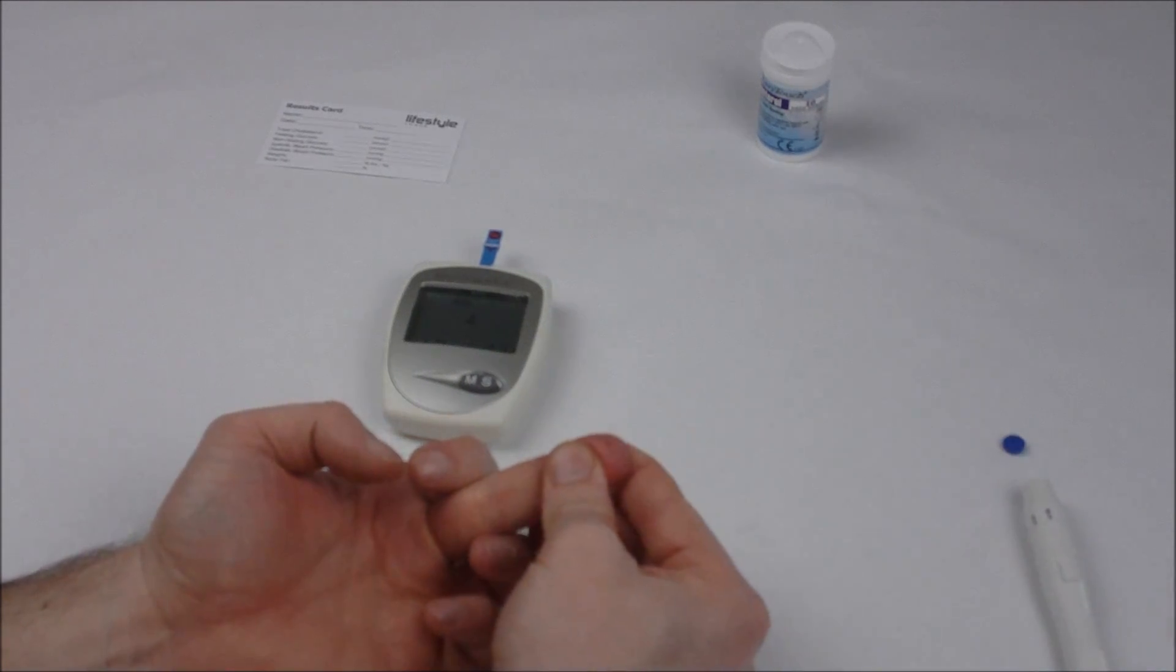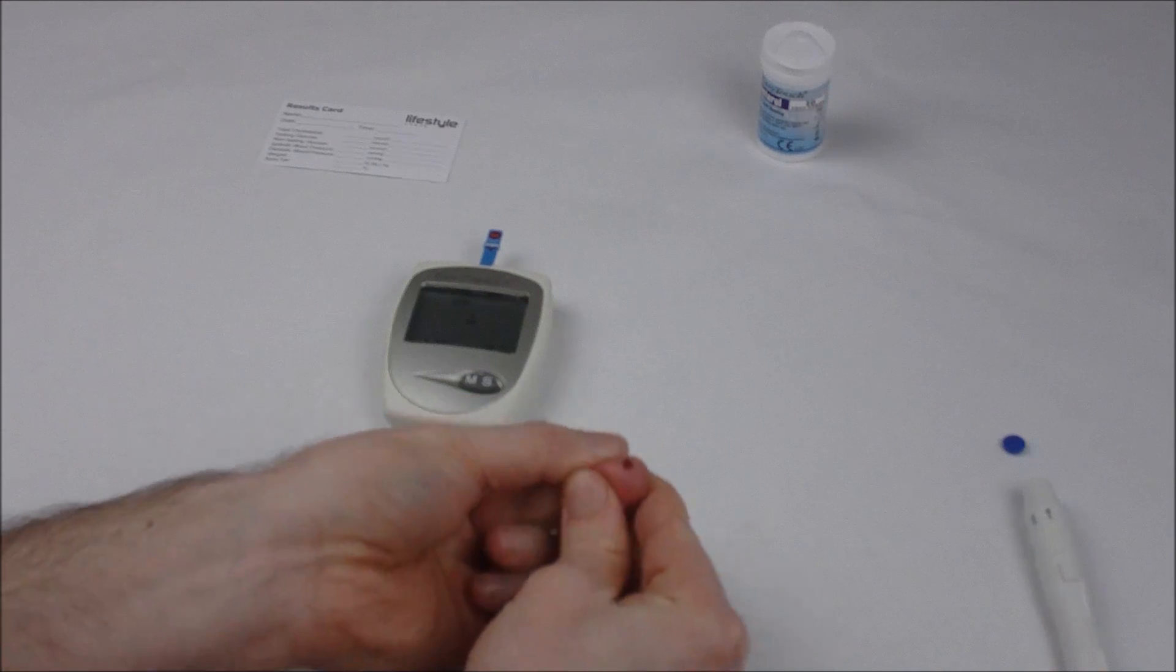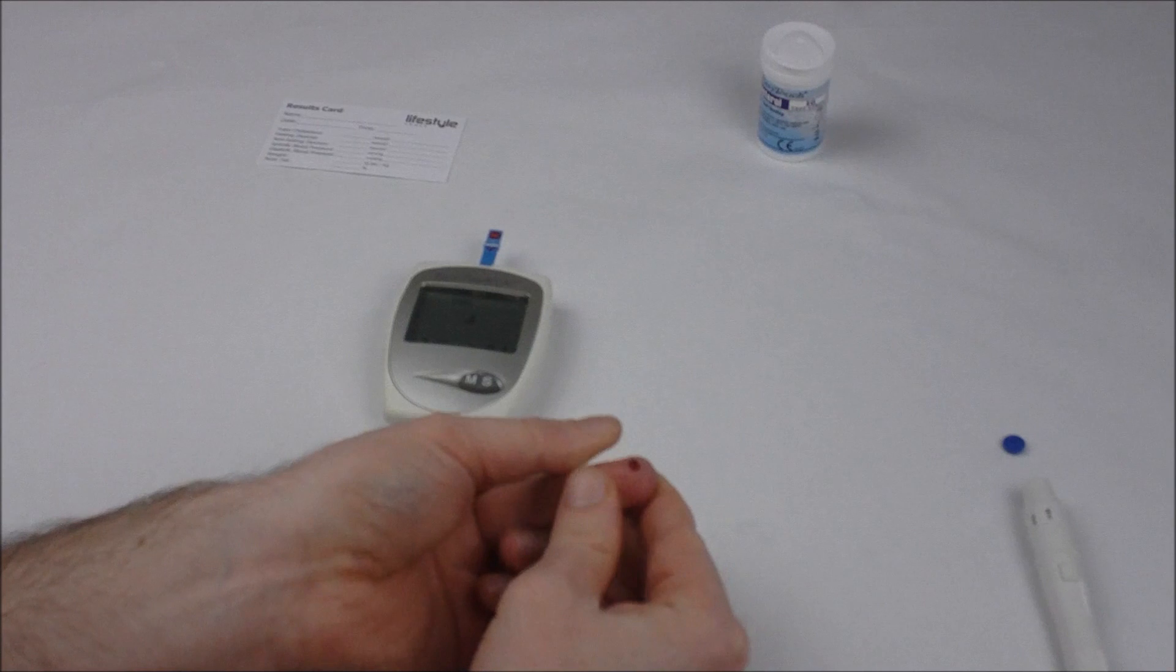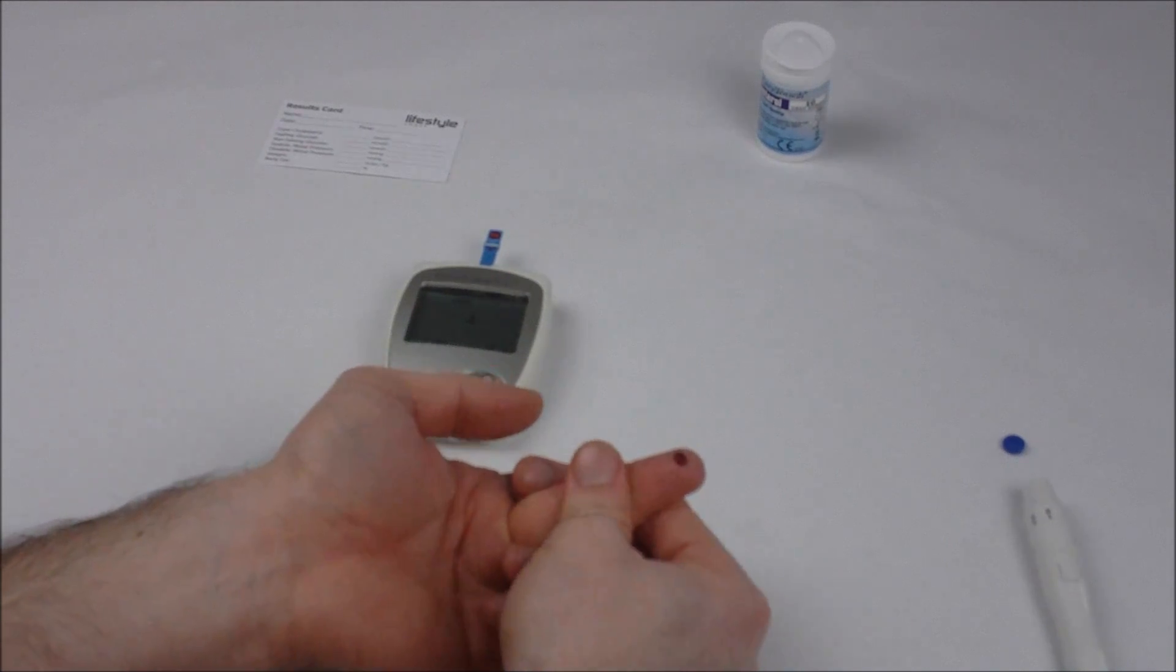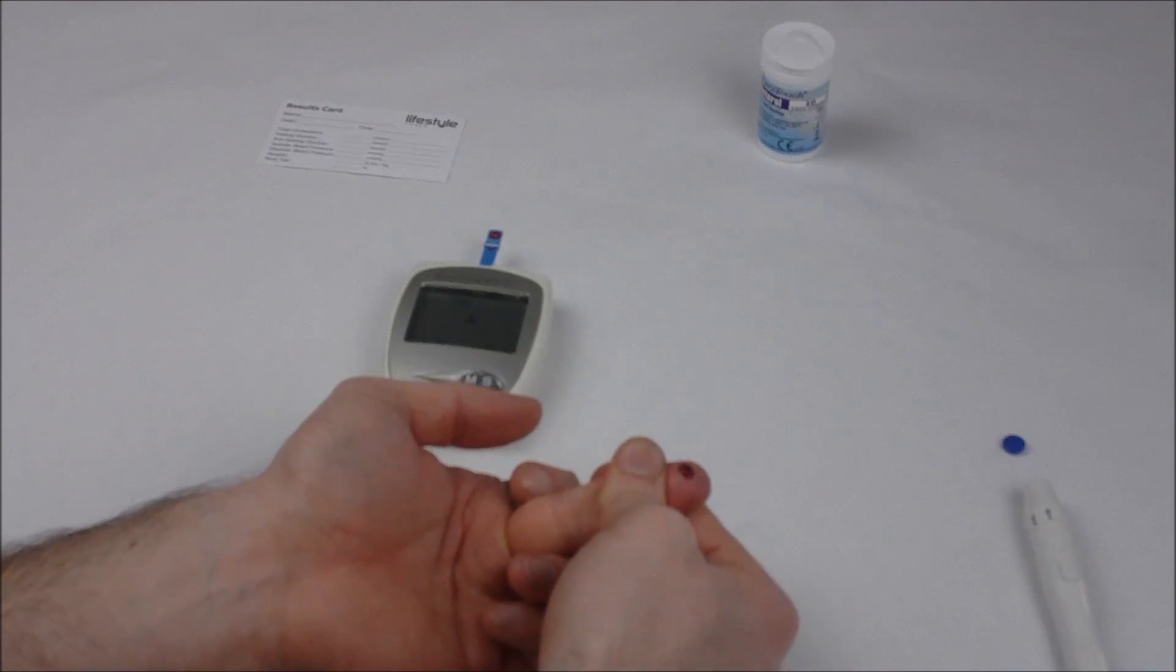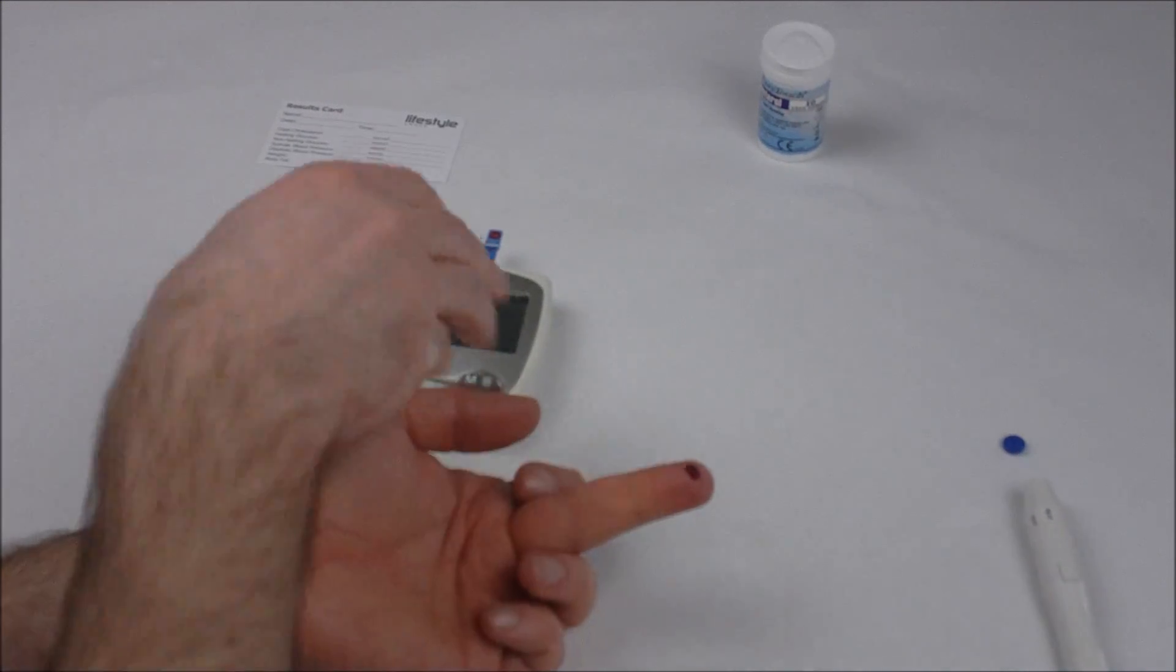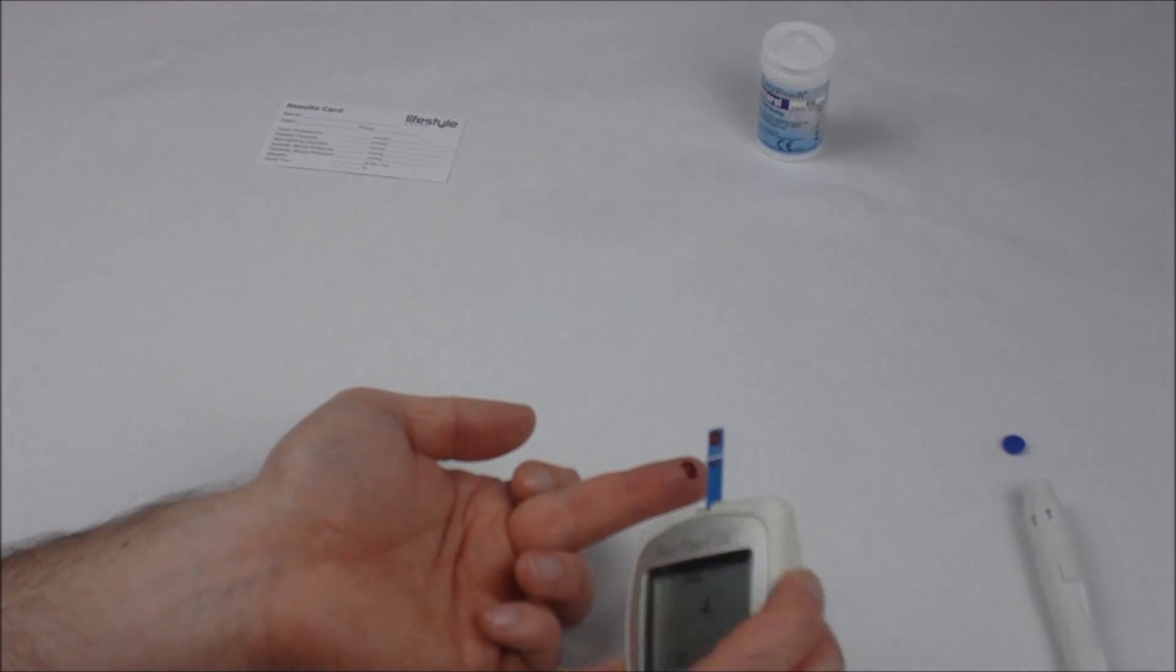Put your lancet pen to one side and allow your finger to bleed. Try not to squeeze too much. If you need to squeeze, do it from further down here. That will help ensure you get a good blood supply, and once you've got a big drop grab your monitor.